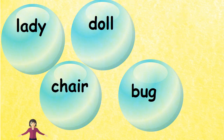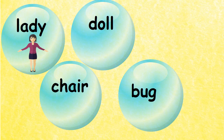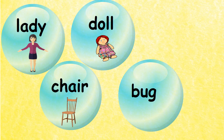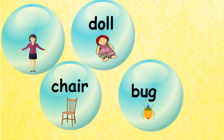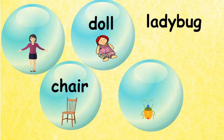We have lady, doll, chair, and bug. Let's look at the four words: lady, doll, chair, and bug. We are going to make a compound word. We are going to use the words lady and bug, and that will give us ladybug.